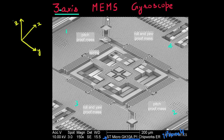You might be surprised, because in the previous example we were using two of these proof masses to detect angular rotation along one axis. So how can this particular gyroscope use just four of these proof masses and be able to detect angular rotation along all three axes? I'll explain how it's using a very clever design.